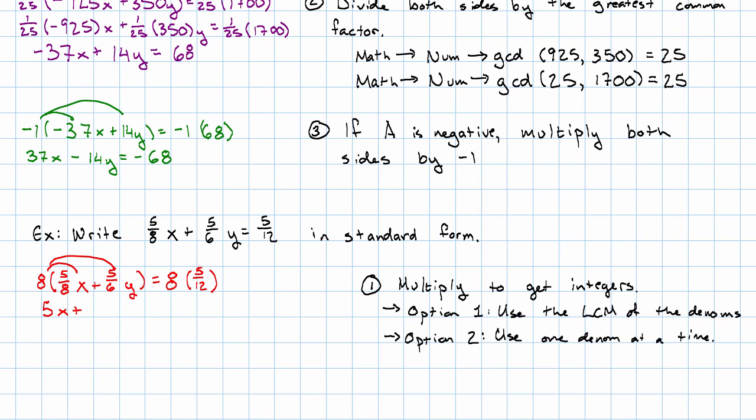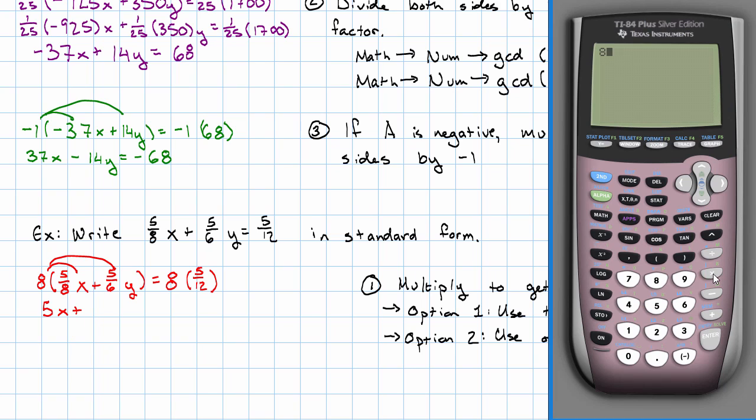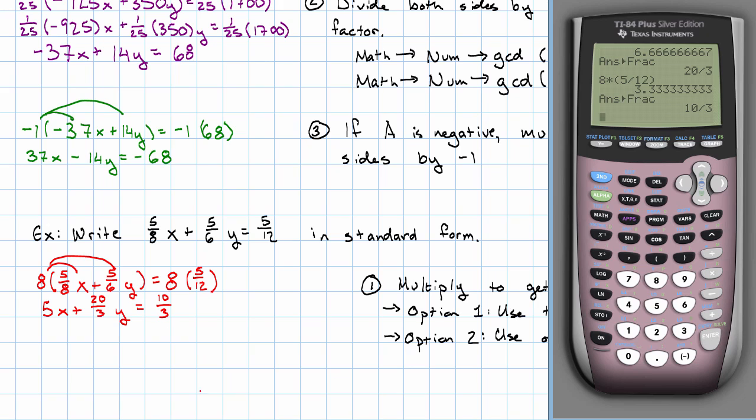8 times 5/8 is just 5. 8 times 5/6, make that a fraction, is 20/3. And 8 times 5/12, make that a fraction, is 10/3. Now my only remaining denominator is 3.